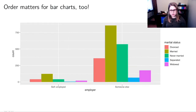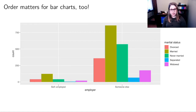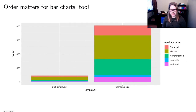Order matters for bar charts too. I could do a side-by-side bar chart where I have self-employed and someone else as my categories, and put all the different marital statuses side by side, letting me see how many people have each marital status within a particular employment status. I could also do the stacked version, though I think that one is harder to read — but depending on the story you're trying to tell, it could be the right choice.